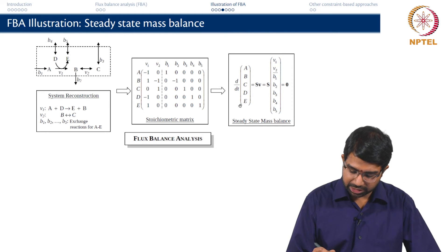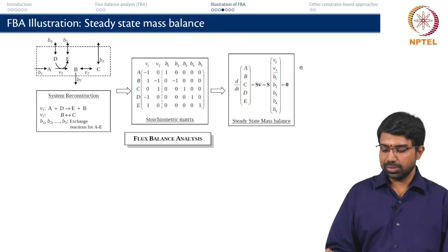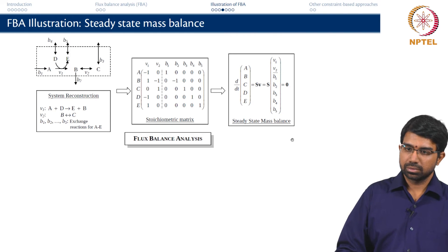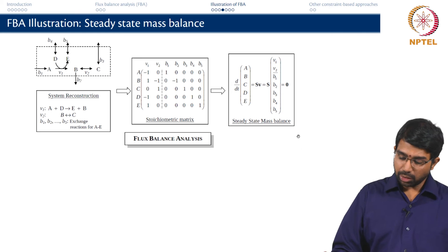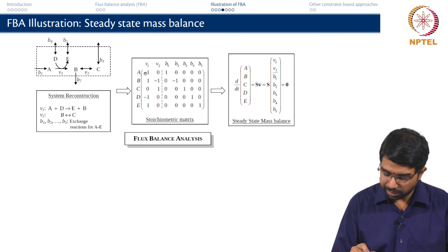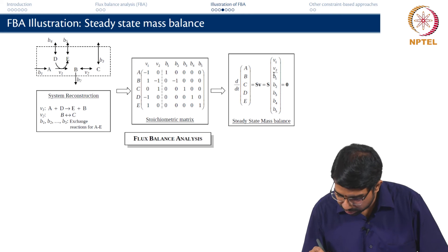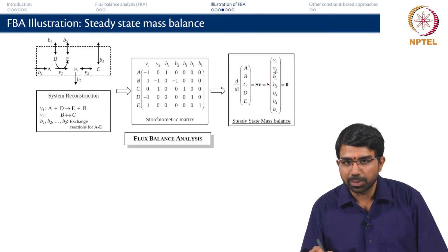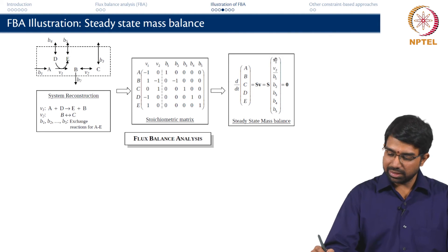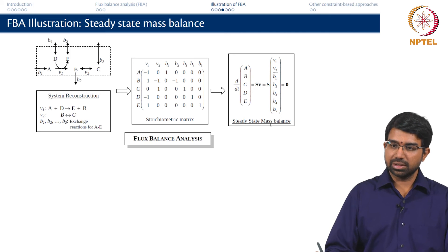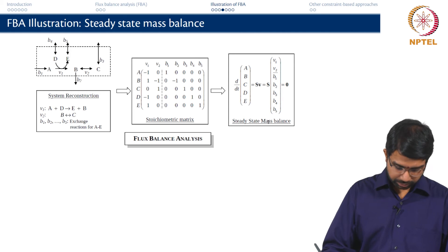Otherwise you just have V1 plus B5 equal to 0, so they are going to be of opposite signs for sure. So now you set up this equation dx by dt equals Sv and you say Sv equals 0. So now you have to solve the system of equations which basically reads minus V1 plus B1 equal to 0, V1 minus V2 minus V2 equals 0, V2 plus B3 equals 0, minus V1 plus B4 equals 0 and so on. I am essentially multiplying this with this matrix multiplication.